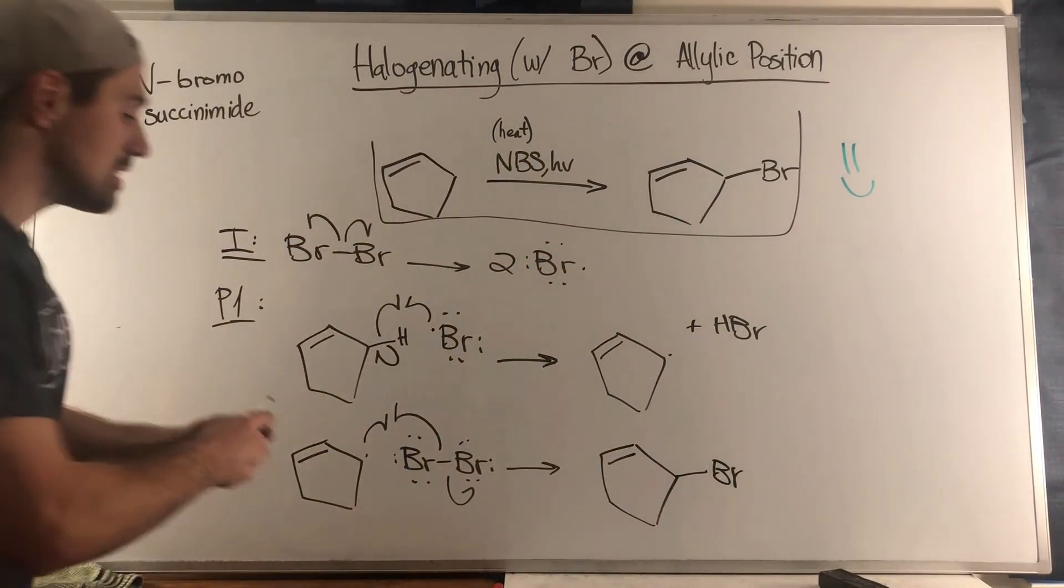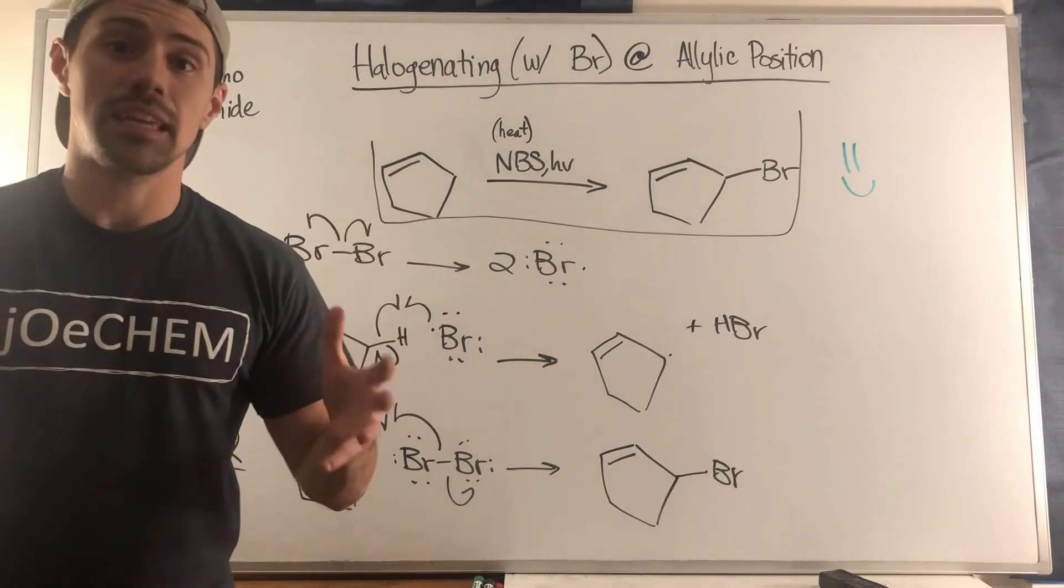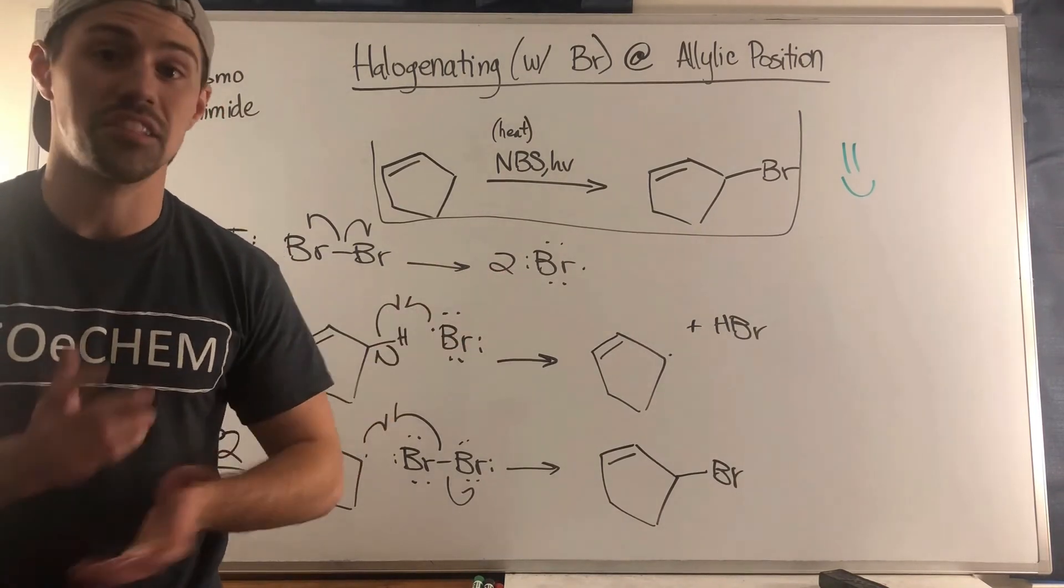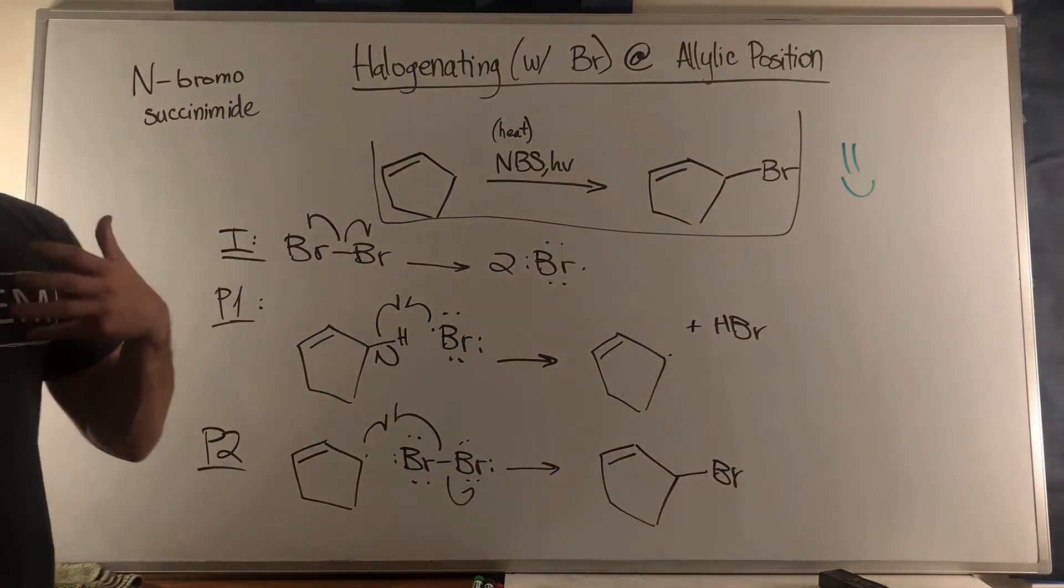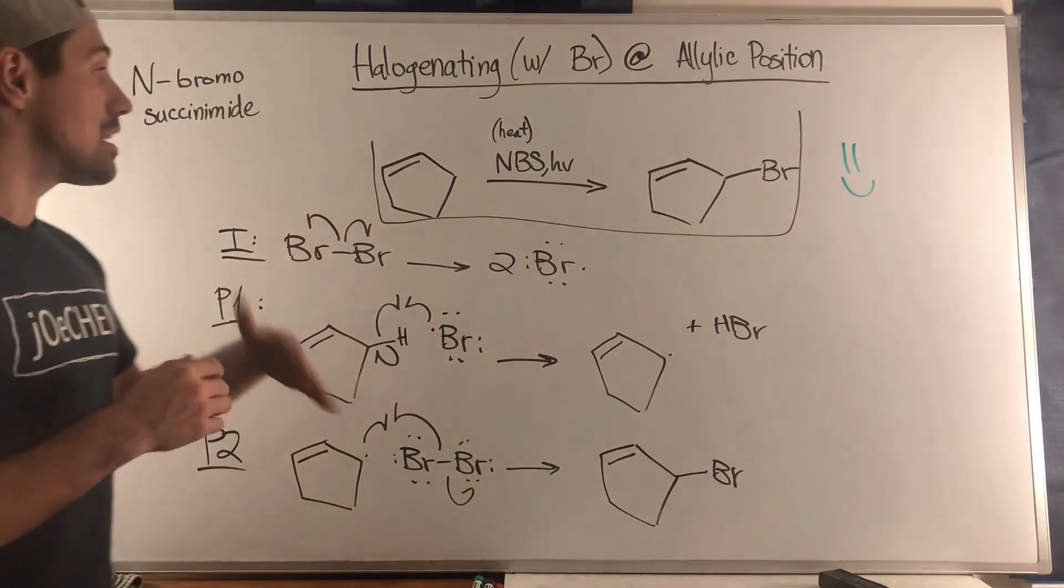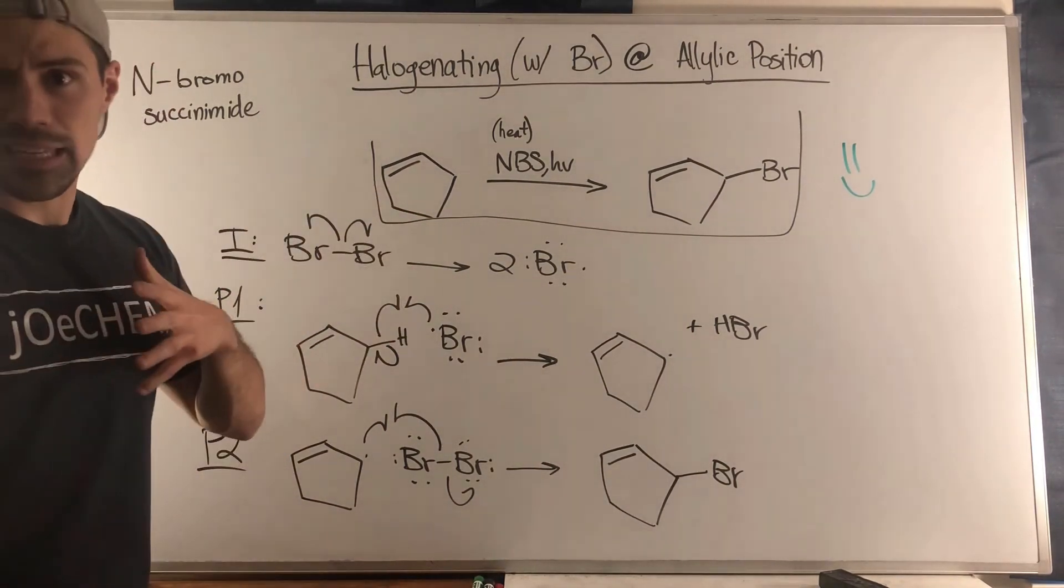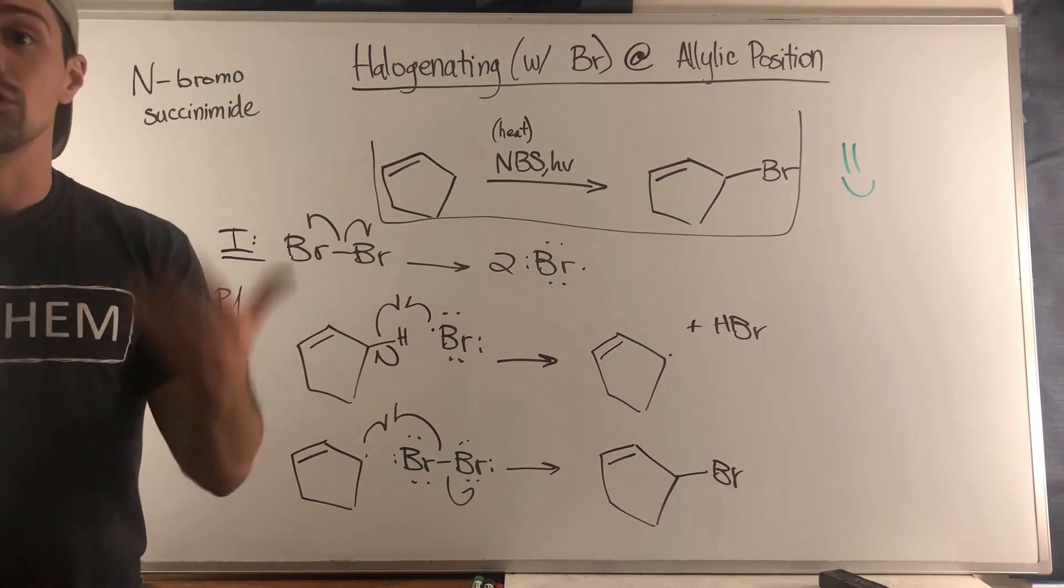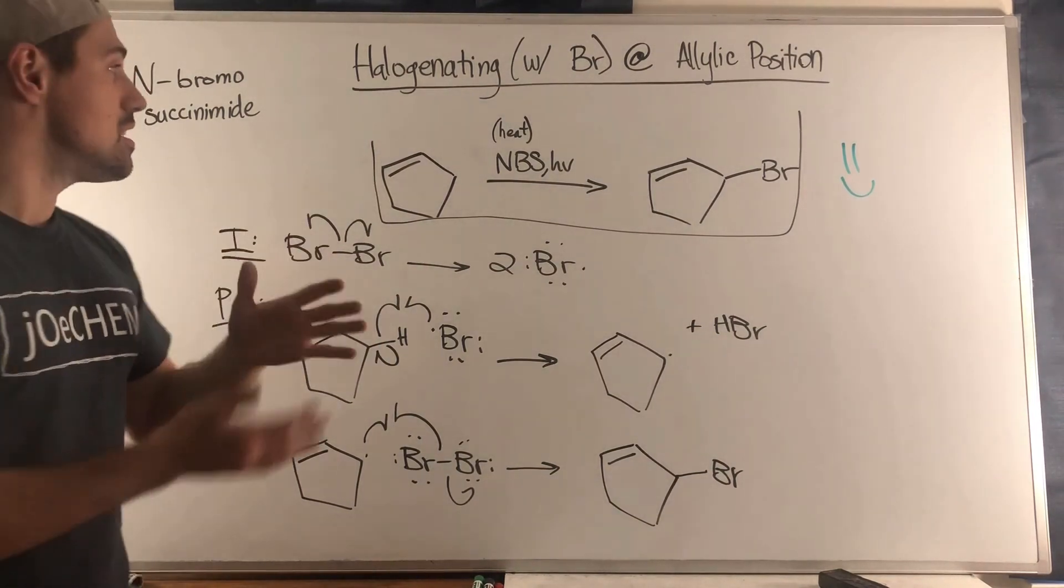Point being is that NBS is something you may see as you start your organic chemistry 2 career in conjugated systems. It comes down to the fact that we can't just use our regular free radical chain reaction skills because of what we know from alkenes. Whether it's Cl2 and light or Br2 light and heat, we will end up halogenating the double bond. The way to get around that is using our new lovely friend NBS.